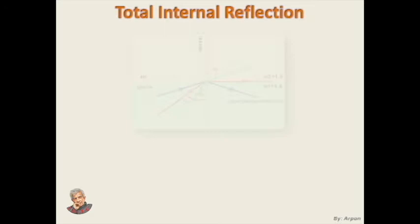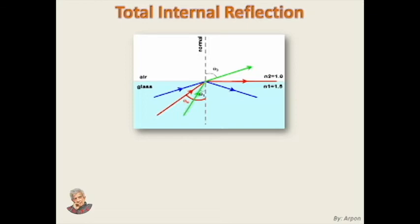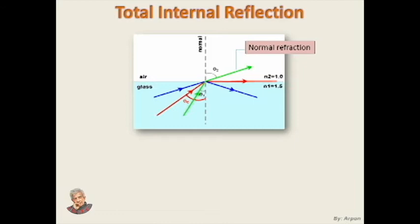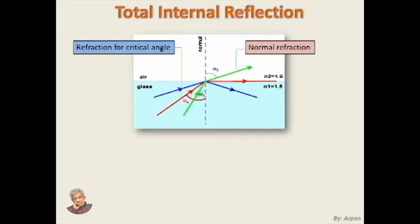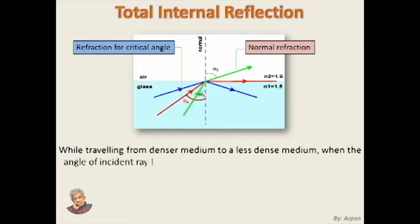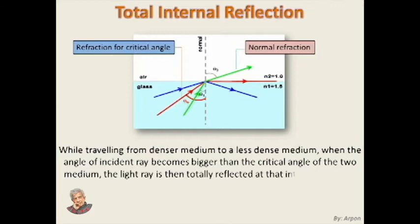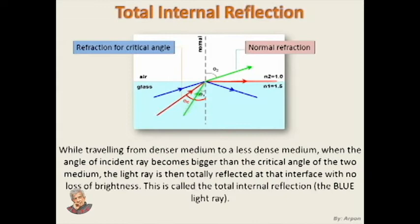Total internal reflection requires the concept of critical angle between two media. In the picture, the green light ray is passing through the denser medium glass to the less dense medium air. The angle of incidence is always less than the angle of refraction. There must be an angle of incidence less than 90 degrees for which the angle of refraction is 90 degrees, and the refracted ray travels across the interface — that angle of incidence is the critical angle. If we increase the angle of incidence beyond the critical angle, there is no refraction. The light ray is then totally reflected at that interface with no loss of brightness. This is called total internal reflection, and the blue light ray is an example of it.